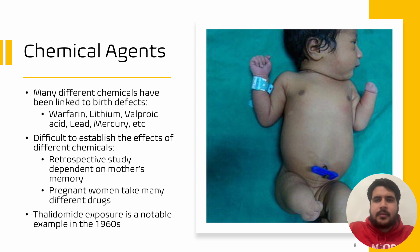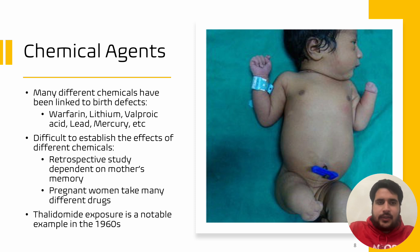So now let's move on to talking about the different types of teratogens. In particular, first we can focus on chemical agents. There are many different chemicals that have been linked to birth defects — for example, lithium, valproic acid, lead, mercury, just to name a few.